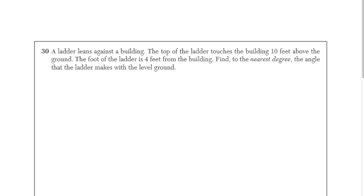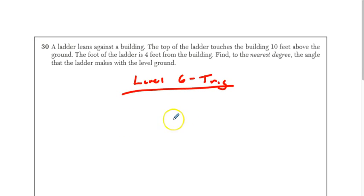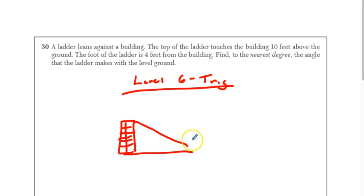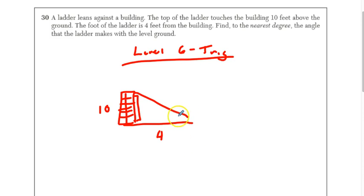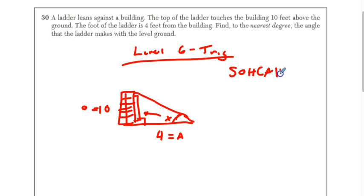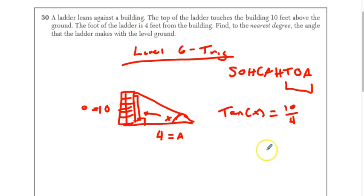This last question is a Level 6 trig problem. Draw a diagram: you have your wall, you have your ladder leaning against it. The top of the ladder touches the building 10 feet above the ground, and the foot of the ladder is 4 feet from the building. We need to find the angle the ladder makes with the ground. Label the sides: the 10 ft side is opposite, the 4 ft side is adjacent, so we use tangent. Set up tan(x) = 10/4.